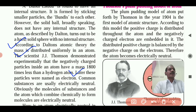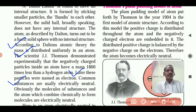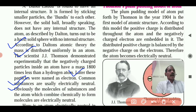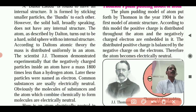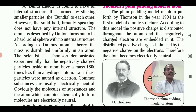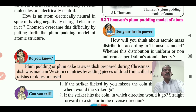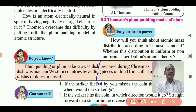These particles were named electrons. Common substances are usually electrically neutral. The molecules of substances and the atoms which combine chemically to form molecules are also electrically neutral.